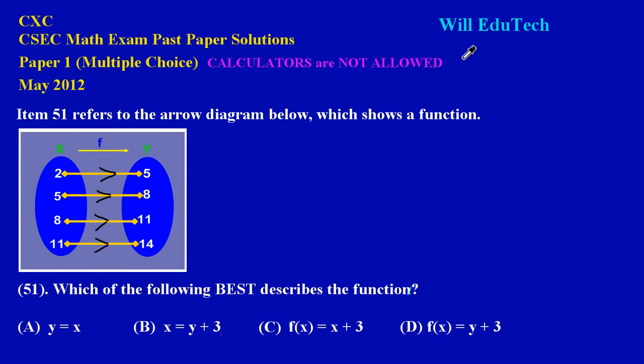It's a pleasure having you again, my friends, here on WillEduTech. In this video we're going to be looking at the solutions to questions 51 and 52 on the May 2012 CSEC math exam, and that's your multiple choice paper. Now here it states item 51 refers to the arrow diagram below which shows a function.